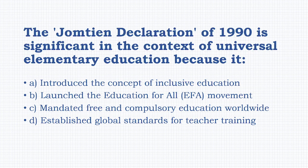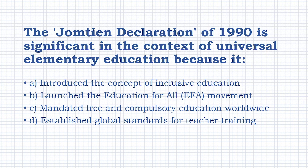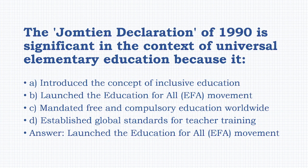The Jomtien Declaration of 1990 is significant in the context of universal elementary education because it launched the Education for All movement.